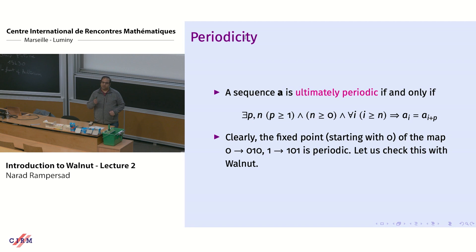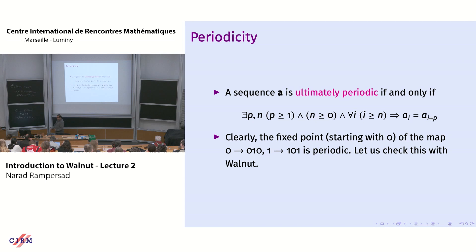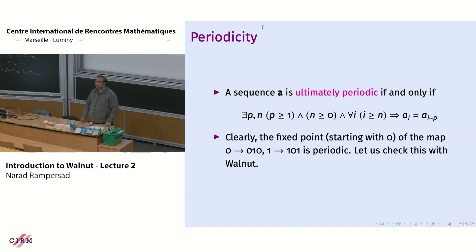What is important is that that extension of Pressburger arithmetic is decidable, which means there is an algorithm that can decide any property of a given automatic sequence that can be expressed in this first-order logic. Today is mostly going to be a lot of examples of different properties of automatic sequences, mainly from the combinatorics on words point of view. I'll show the property, how to express it in first-order logic, and then how to input that into Walnut and have it decide true or false.